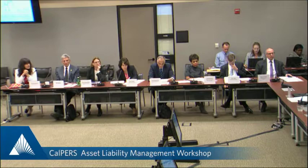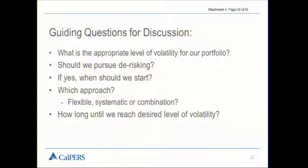At this point, I would like to engage the board in a bit of a discussion. I want us to be thinking about the appropriate level of volatility in our portfolio. I do not need an answer on this right now. Whether or not we should pursue de-risking — just a discussion. When should we start? What's the approach — flexible, systematic, or a combination? And how long until we reach the desired level of volatility? All of these things are things we need to think about if we are going to pursue de-risking.